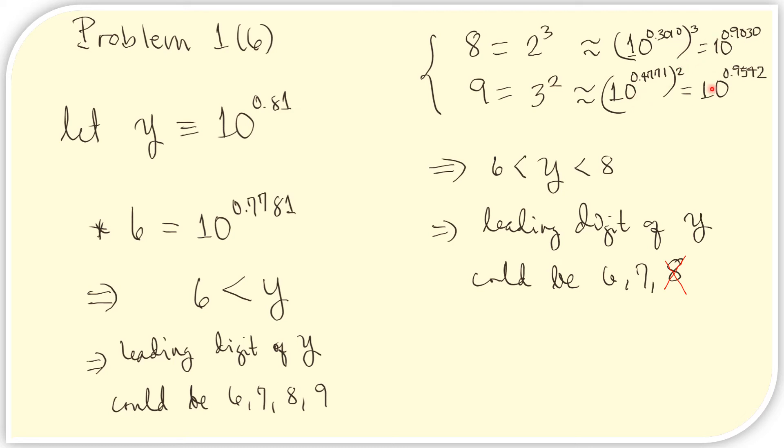We just simplify them, we obtain these. If we look at the exponent for this and this, we see that they are both greater than this. And so, we can say that y is less than 8. And from here, 6 is less than y.